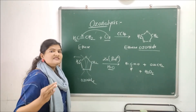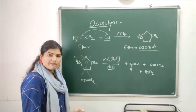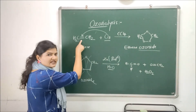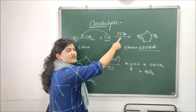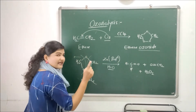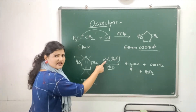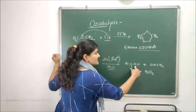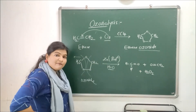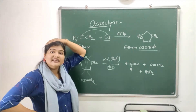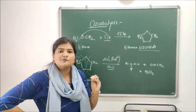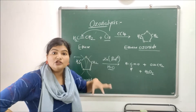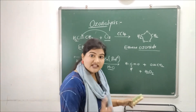Ozonolysis is a reaction that combines formation of an unstable ozonide by addition of ozone to an alkene in presence of inert solvents like carbon tetrachloride, and subsequent reduction in presence of zinc and water to form carbonyl compounds and hydrogen peroxide. These carbonyl compounds are helpful in deciding which alkene molecule we are dealing with. Ozonolysis is probably the best method for determining the position of a double bond in unknown alkene compounds.